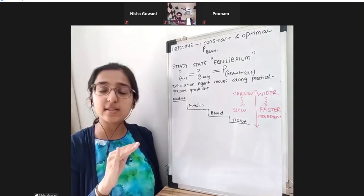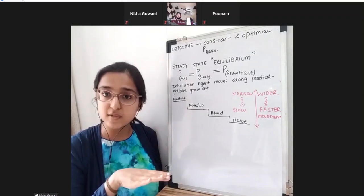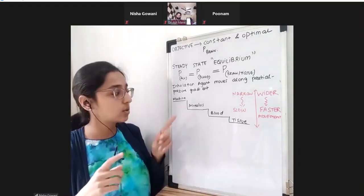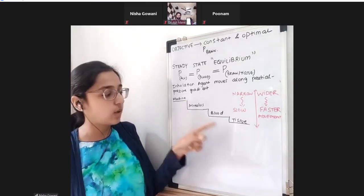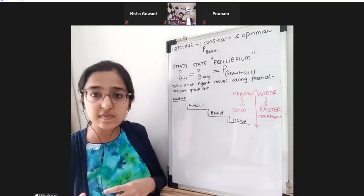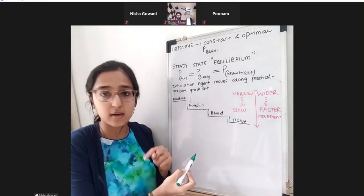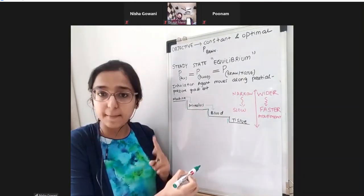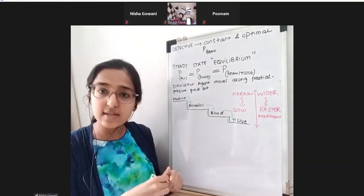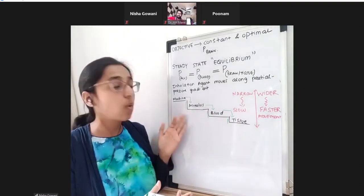We need to understand how the partial pressure gradient determines whether movement is faster or slower. There are three steps of transfer of the inhalation agent: Step 1 — machine to alveolus; Step 2 — alveolus to blood; Step 3 — blood to tissue. At each step, certain factors determine the movement of the agent.